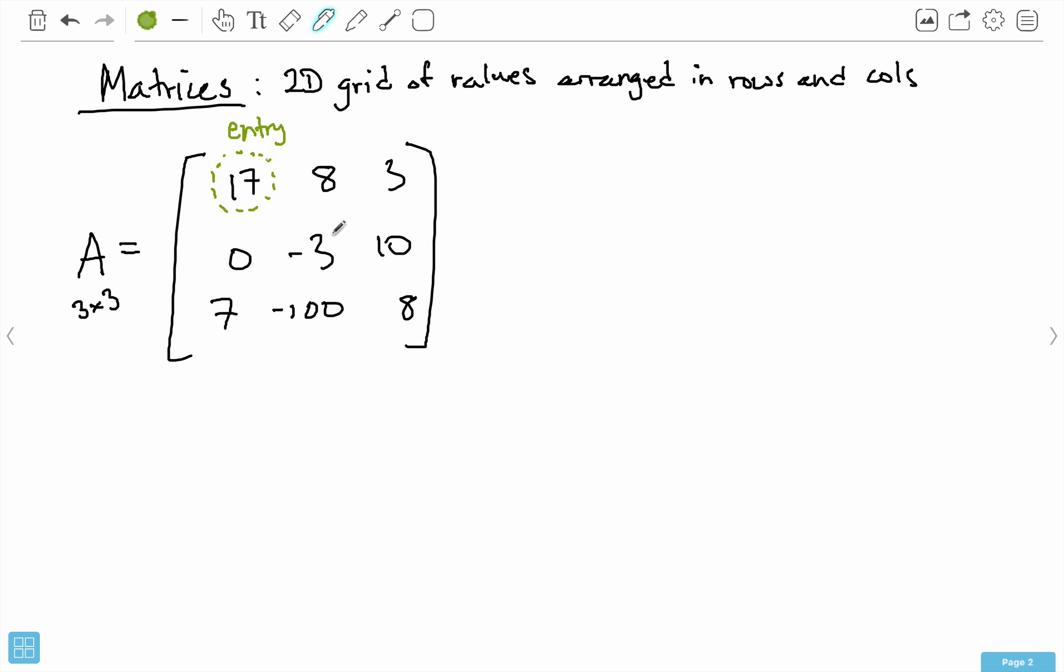We can use capital A to refer to the entire matrix as a whole, this entire grid of values, or we can refer to a particular element of a matrix using this particular notation. For example, if I wanted to refer to this 17 that I just highlighted, that would be element A sub 1,1 equals 17.